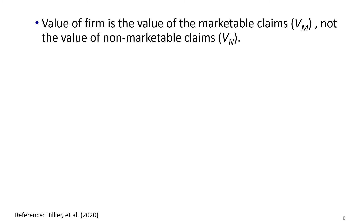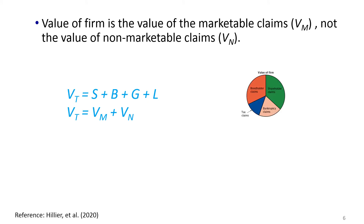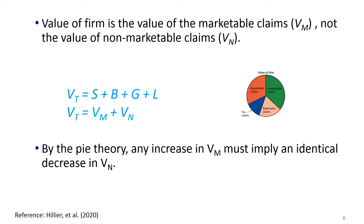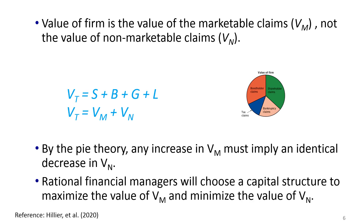When we speak of the value of the firm, we are referring just to the value of the marketable claims Vm, not the value of non-marketable claims Vn. By the PI theory, any increase in Vm must imply an identical decrease in Vn. Rational financial managers will therefore choose a capital structure to maximize the value of Vm and minimize the value of Vn.